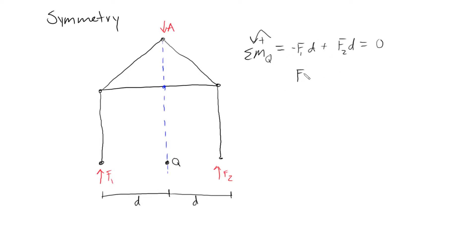So by solving this equation, we could simply say that F1*d equals F2*d, and we could simply say that F1 equals F2.